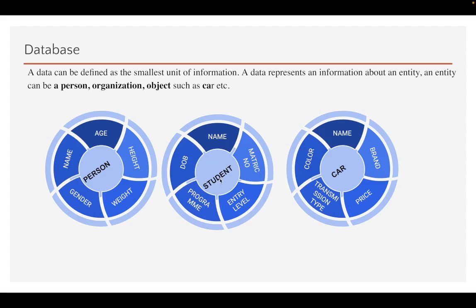A student as an entity can have a lot of data attributed to them — a matric number, name, date of birth, entry level, the program enrolled in, department, and more. Similarly, a car entity has attributes like price, brand, color, and transmission type.